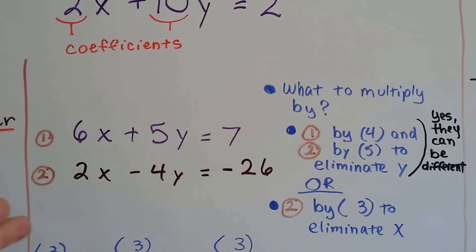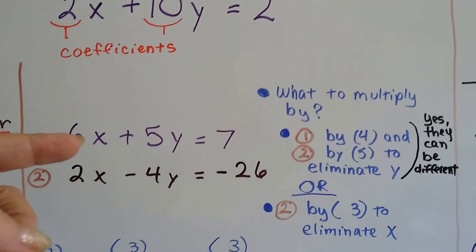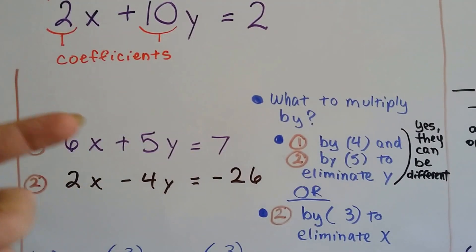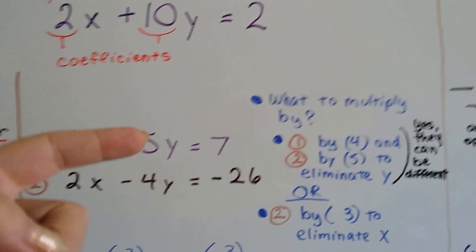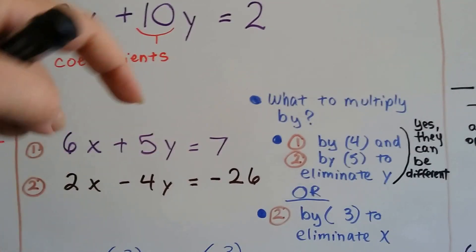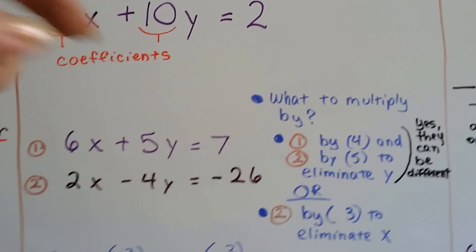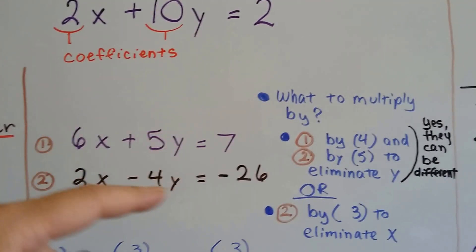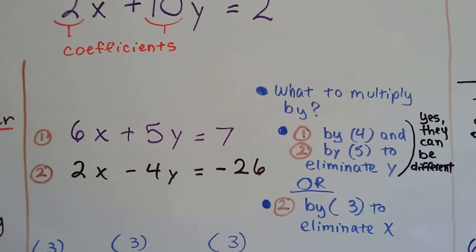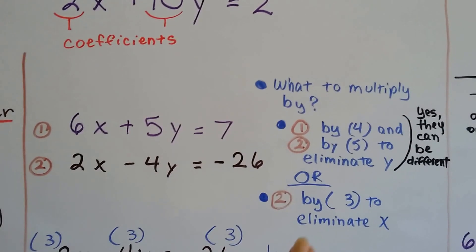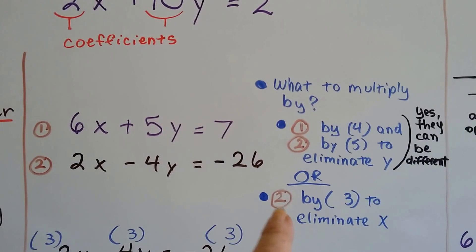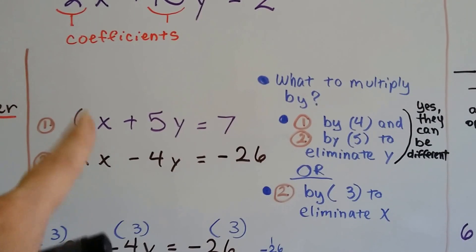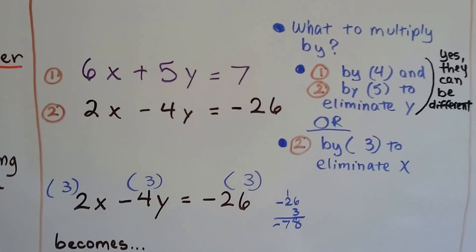So, what do we multiply by? Well, if you look at these, we could take the long way, because they can both be multiplied by different numbers. We could multiply this equation by 4, and that'll raise this to a 20y. Then we can multiply this by 5 and raise that to a 20y, and then we can eliminate the y. Or, we could take the easy route and just multiply equation 2 by a 3, and then we can eliminate x. Quicker.